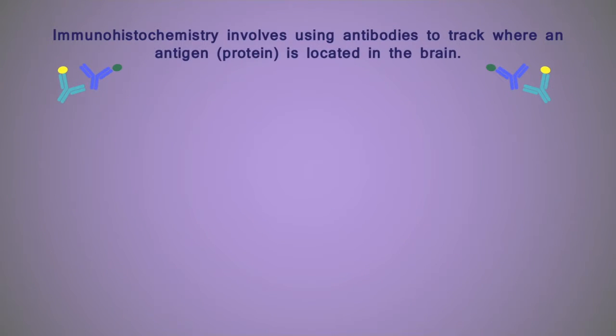So, to summarize, immunohistochemical staining involves exposing a tissue to a specialized antibody, one that's carrying a fluorescent marker that we are able to visualize, for the purpose of tracking where the target antigen, which is a protein, is located in that tissue.